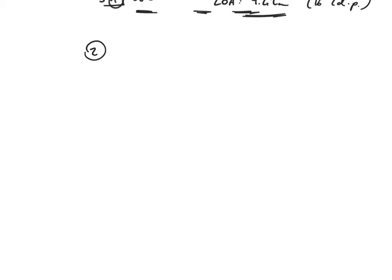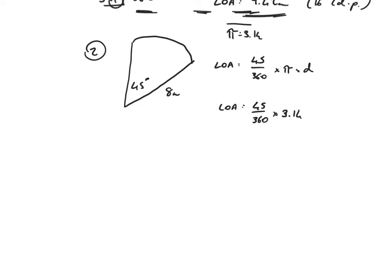Okay, let's try example 2. Here's the arc. The angle at the center is 45 degrees. The radius is 8 centimeters, and I'm going to find the length of the arc without using the calculator. So length of arc is equal to 45 out of 360 times pi times the diameter. That's 45 out of 360 multiplied by 3.14, times the diameter. The radius is given by 8, so the diameter then will be given by 16.